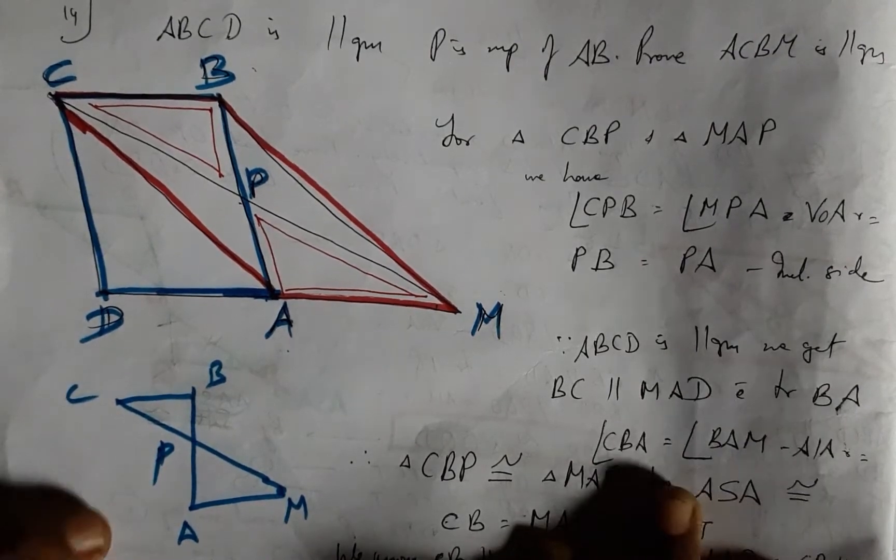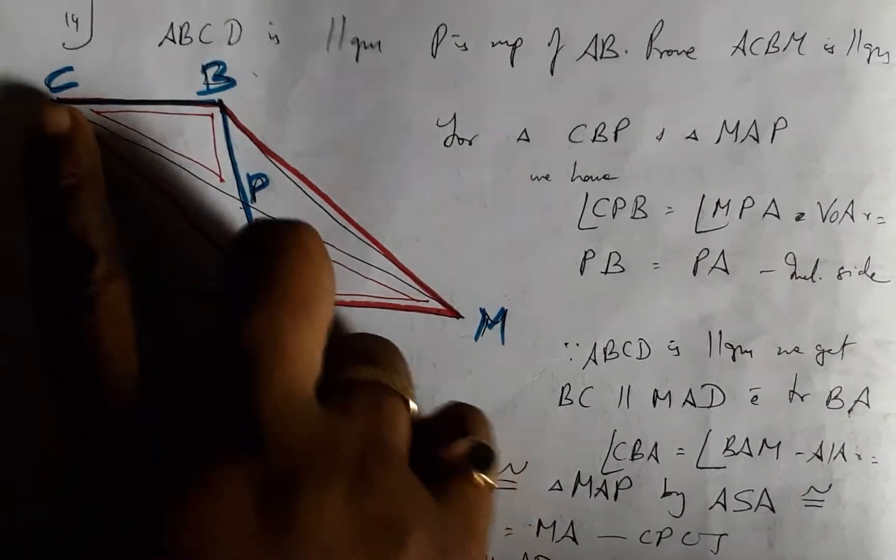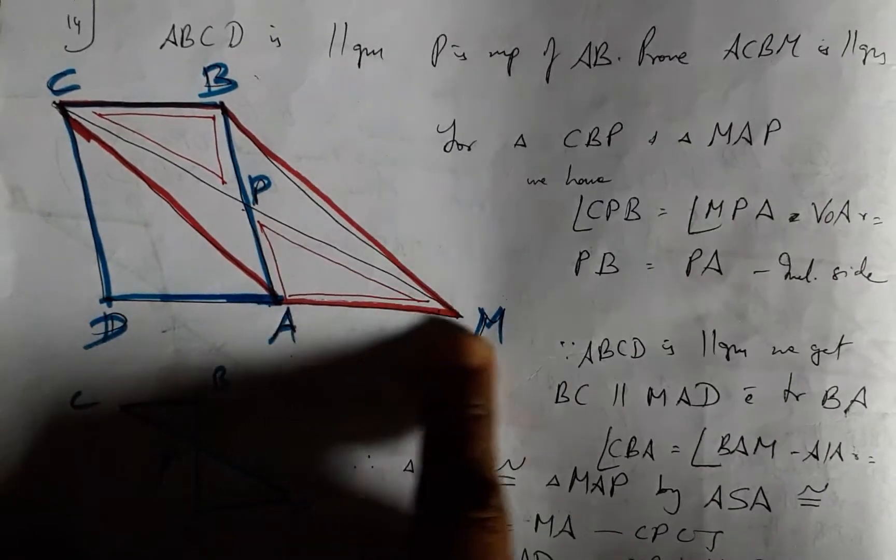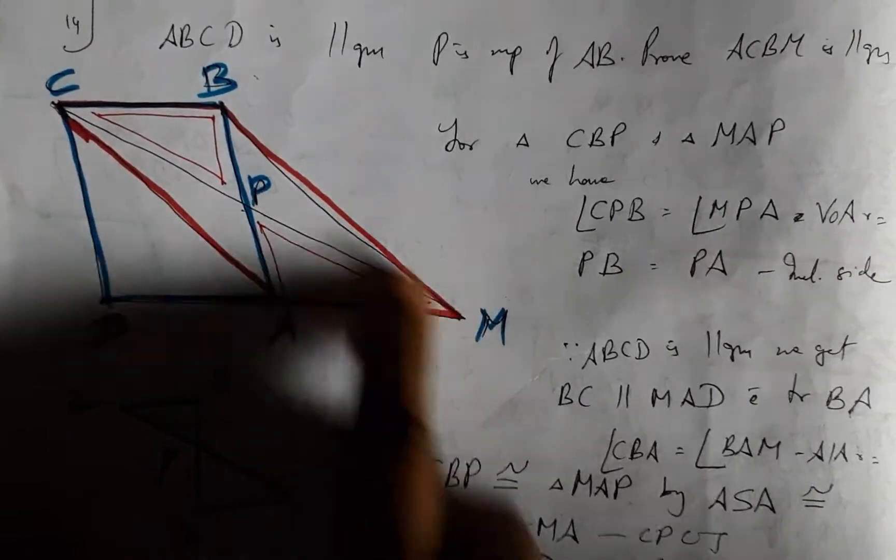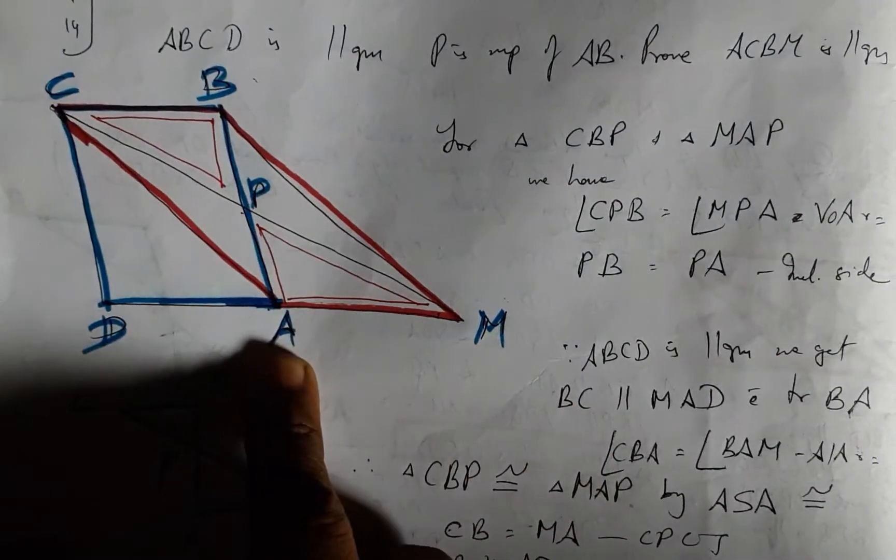And then since BC is parallel to AD and M is extension of AD, we have this is parallel to this with transversal AB.